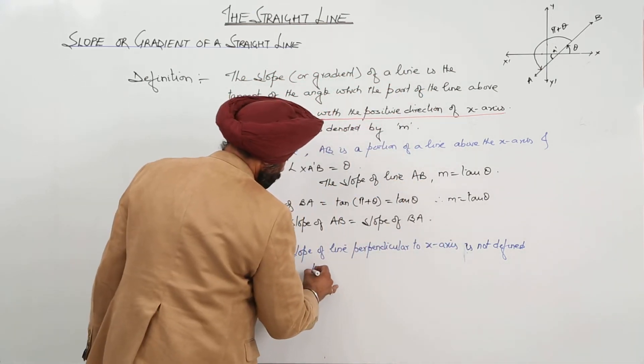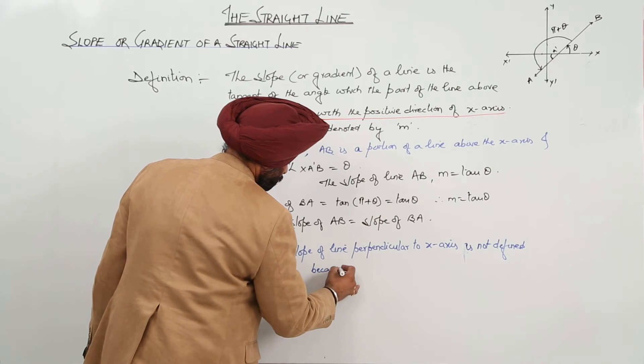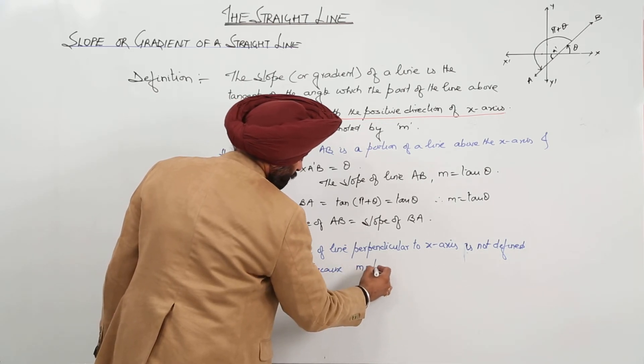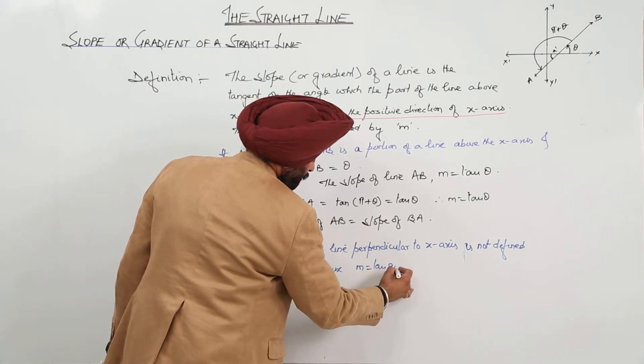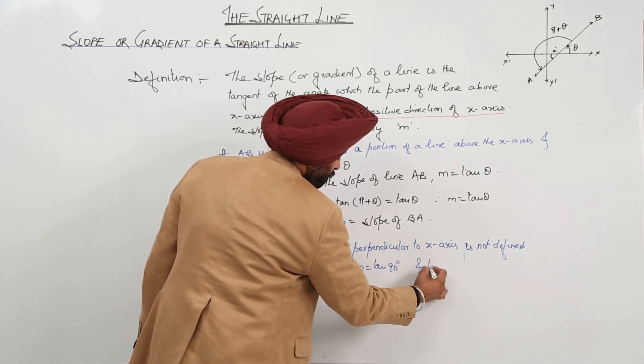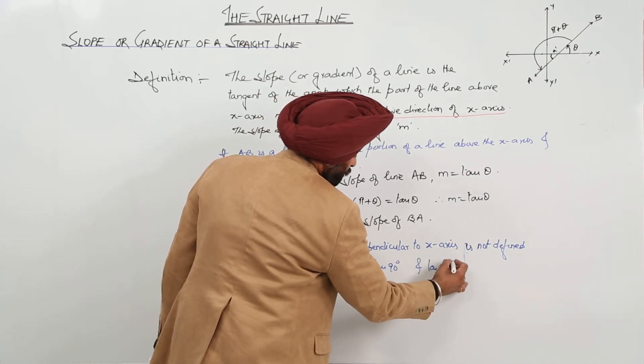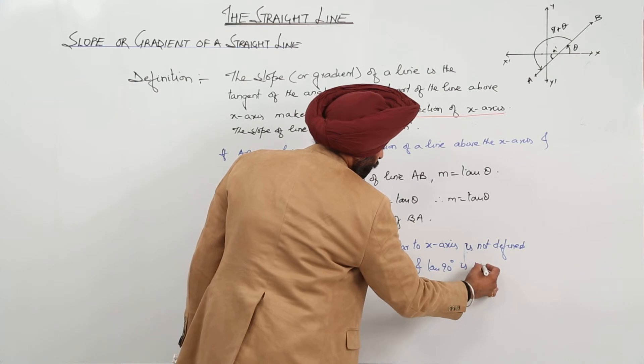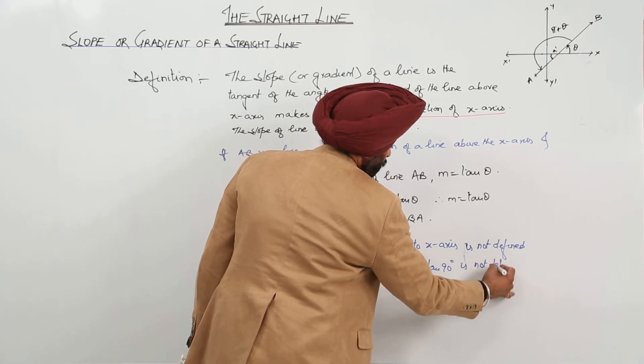Why? Because here M is equal to tan 90 degree and tan 90 degree is not defined.